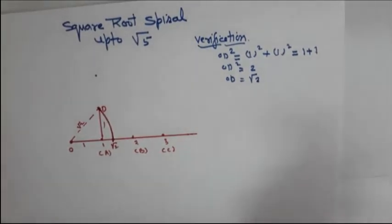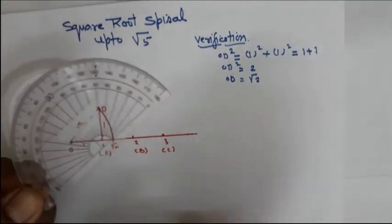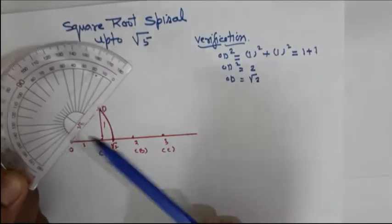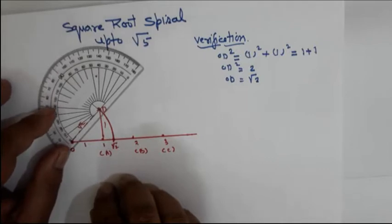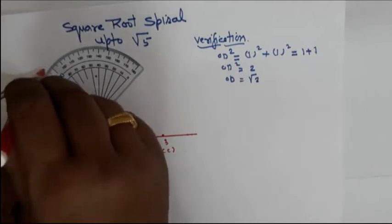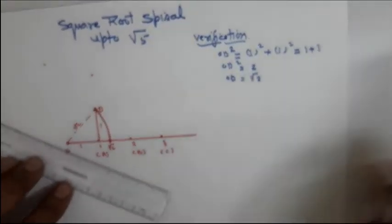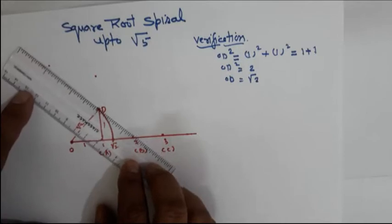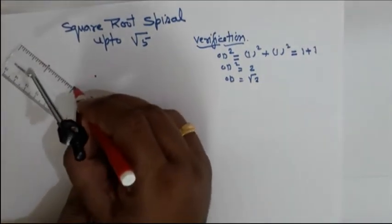Now repeat the same step. Place the protractor on the OD line — fix its reference point at D so the line aligns with OD — and mark a point at 90 degrees. Take the scale, fix it, and draw a perpendicular of 1 inch from that 90-degree point.